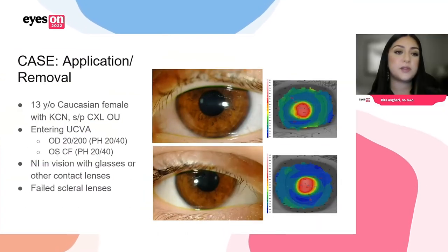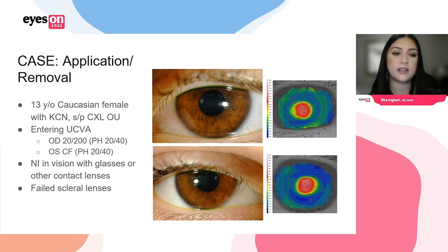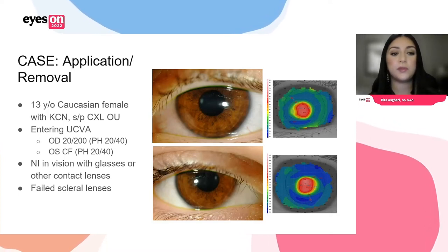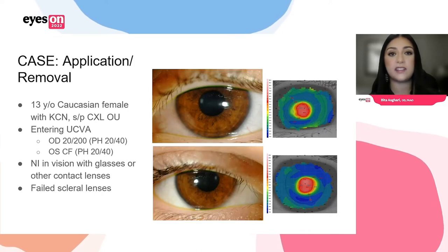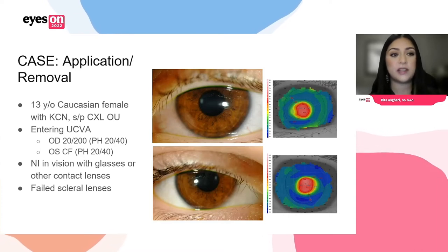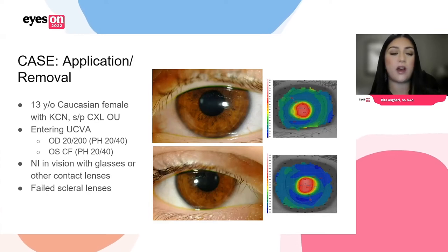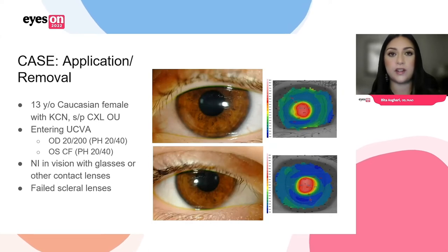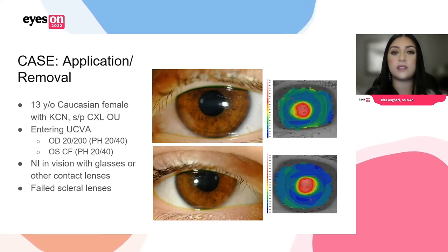Now we're getting to the fun stuff — the case review. At the time, she was 13 years old with keratoconus who had had cross-linking. Vision was obviously reduced, left eye worse than the right. This young girl had a history of having no improvement with glasses or other contact lenses, and she had failed scleral lenses because of a very difficult time applying and removing. At this point, she has the clinical indication, the history of failing other treatments, and she and her mom were very motivated to try something else.